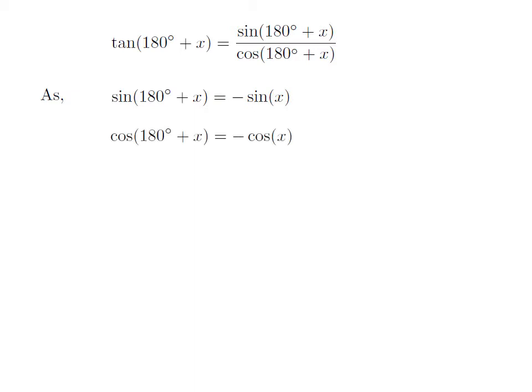We also know the trigonometric identity: cosine of 180 degrees plus x is equal to minus cosine of x. The proof of this identity has been explained in the video appearing in the upper right corner, and the URL has also been mentioned in the description section.